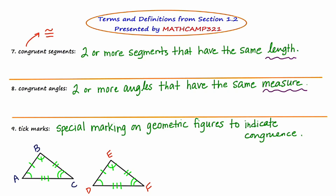I'm going to illustrate congruent segments. I'll draw two segments: segment AB and segment CD. Imagine I took a ruler out and measured them, and AB was two inches and CD was two inches. Would you say AB and CD have the same length? I would — they both are two inches. So I can conclude that segment AB and segment CD are congruent, and I would write that using the congruent symbol.